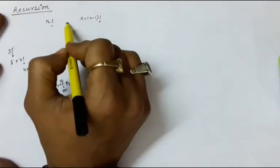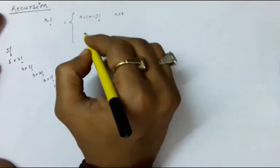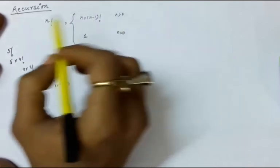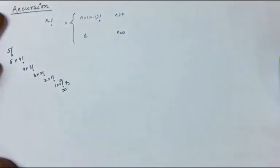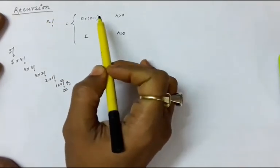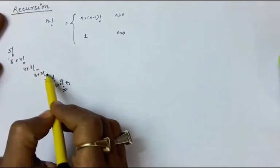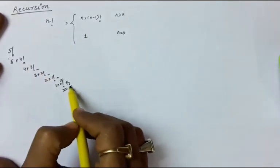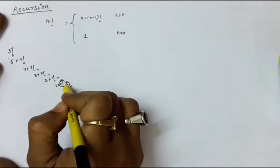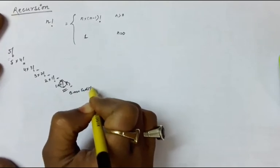Factorial n is defined as n into factorial n minus 1 if n is greater than 0, otherwise it is 1. It means if n is 0, factorial 0 equals 1. You are defining factorial in its own terms, but since you are decreasing the term every time, there is a limit. When the limit condition comes, that is the base condition and you return a value directly.